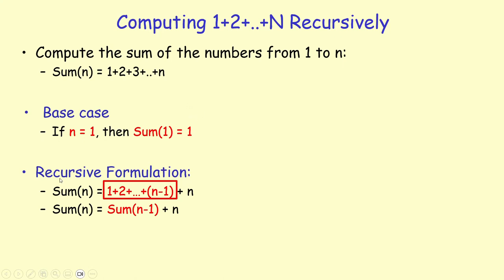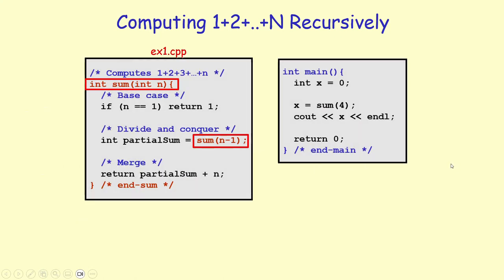Now let's recursively formulate the problem. We can write the sum from 1 to n as (1 + 2 + ... + n-1) + n. To compute the sum from 1 to n, you first compute the sum from 1 to n-1 — that's the subproblem of the same type with smaller scale, which we call sum(n-1). The merge step is simple: add n to the solution of the subproblem to get the solution to our original problem of size n.